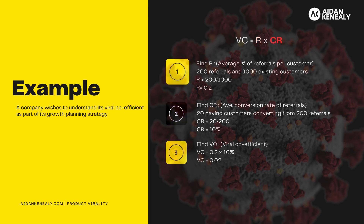Next is to find CR, the average conversion rate of referrals. We do this by dividing the total number of referrals that converted to new customers by the total number of referrals. Let's say this company had 20 out of 200 referrals that converted into paying customers.